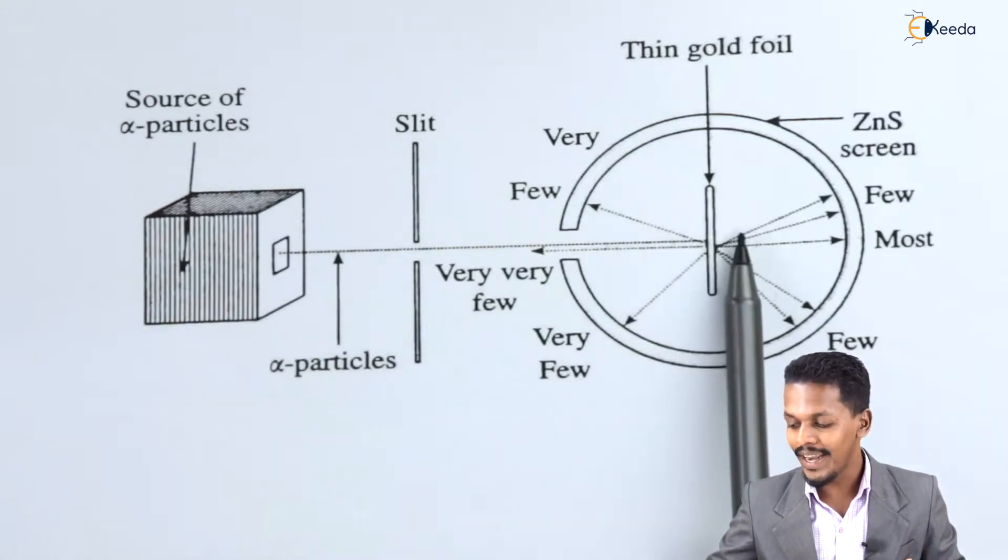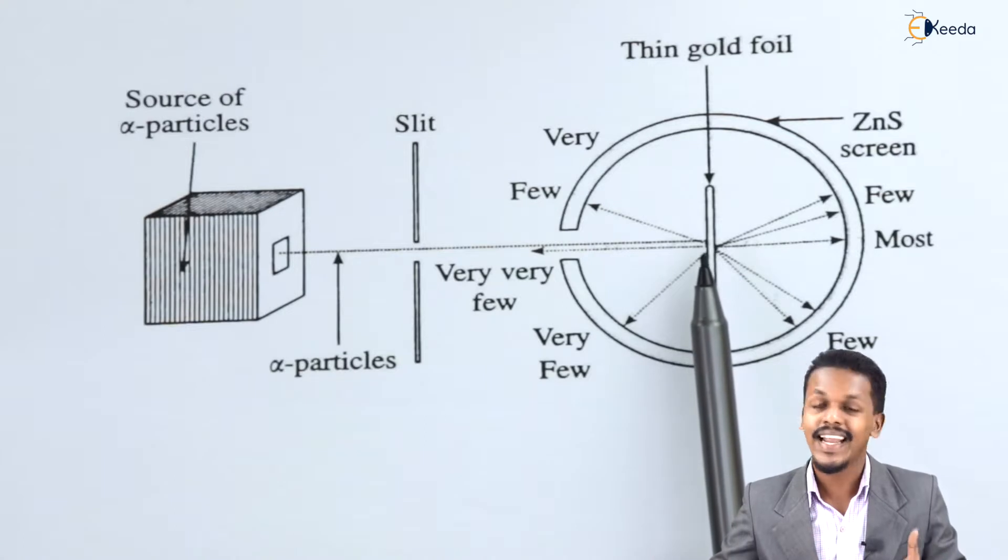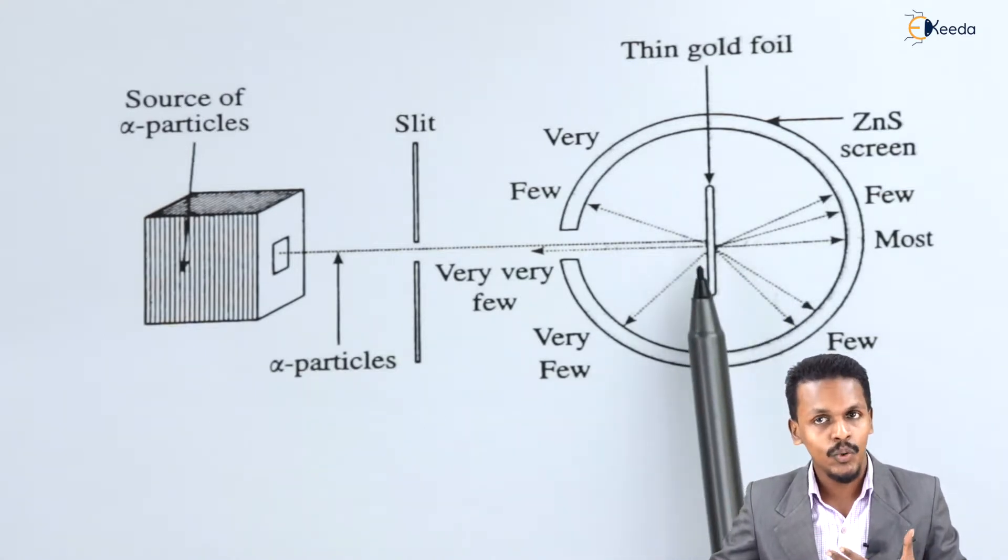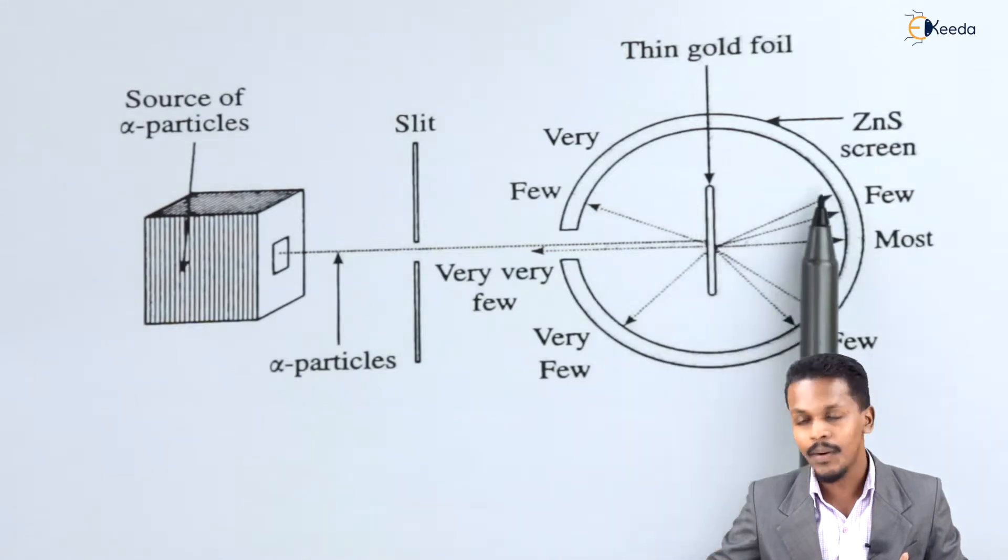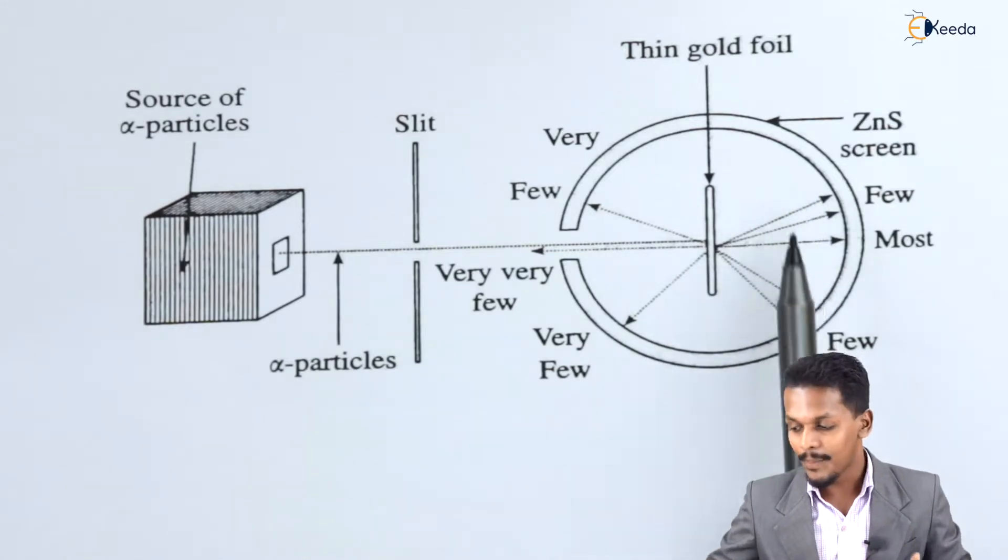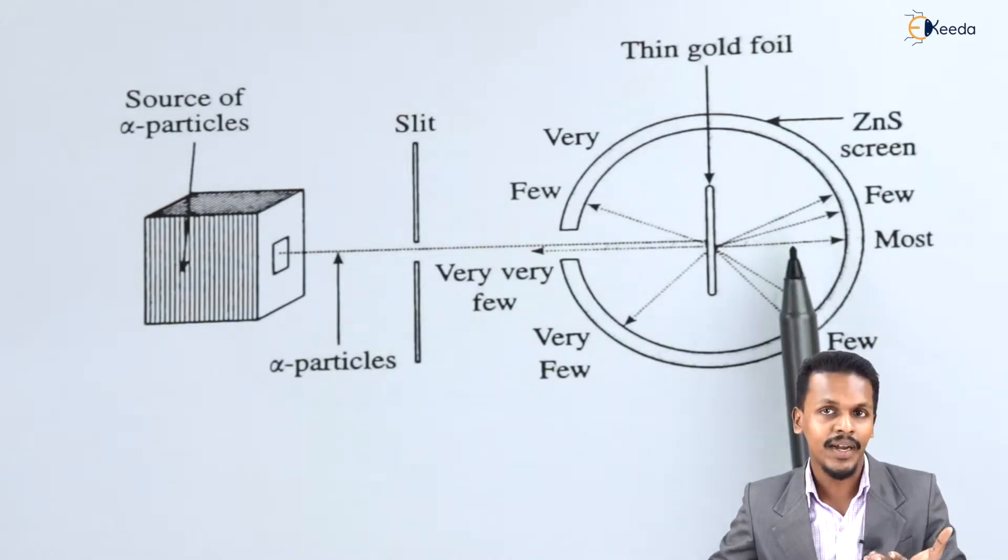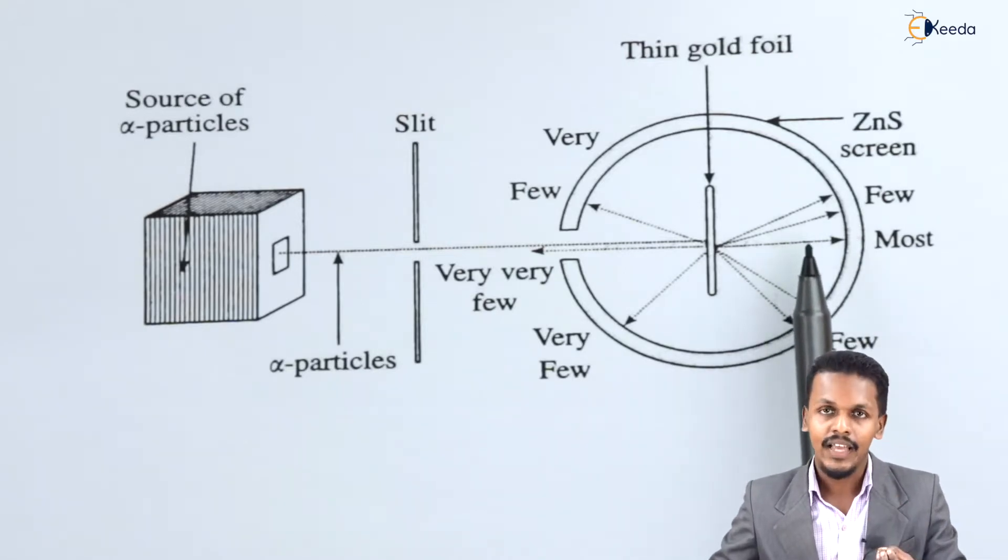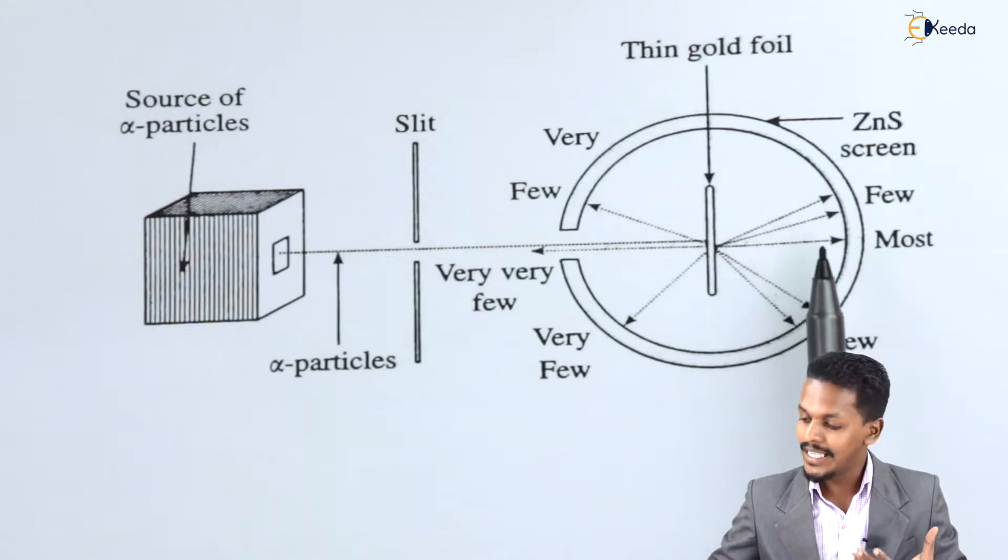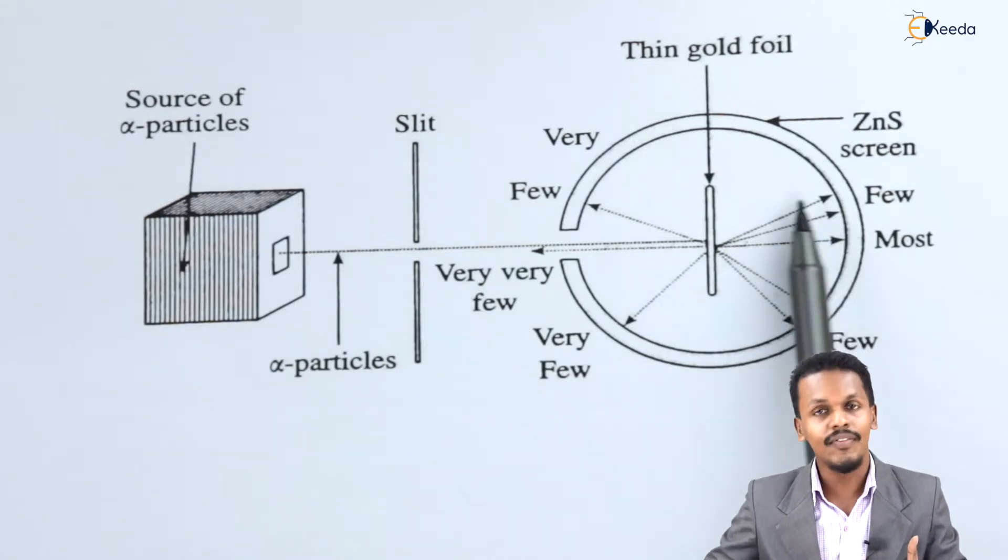It will pass through this gold foil and maximum, that is 99% of the alpha particles, will penetrate through this gold foil and get bombarded on the ZnS screen. Whenever a high velocity alpha particle is bombarded on this ZnS screen, it will glow.